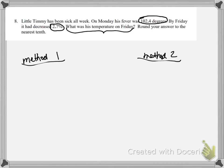We need to find out what is 2.7% of 102.4. So as you can see, I converted my percent to a decimal. And when I multiply those things, I get 2.76 degrees.